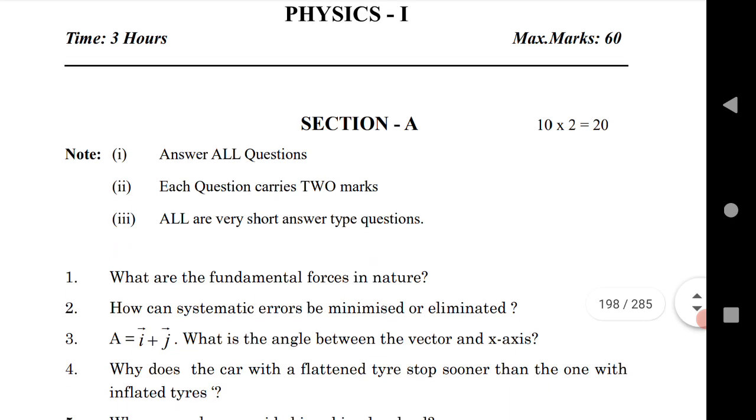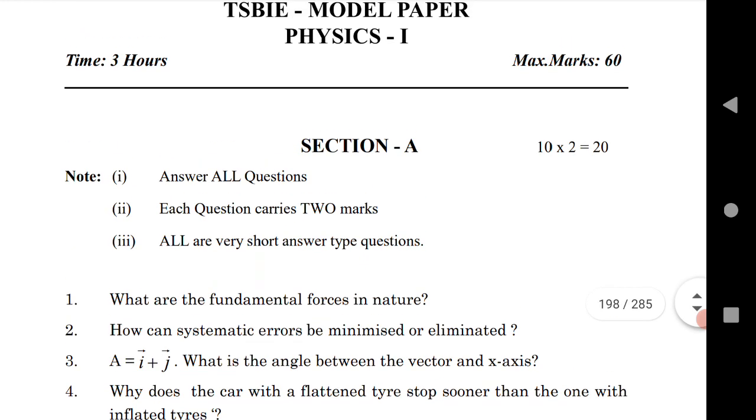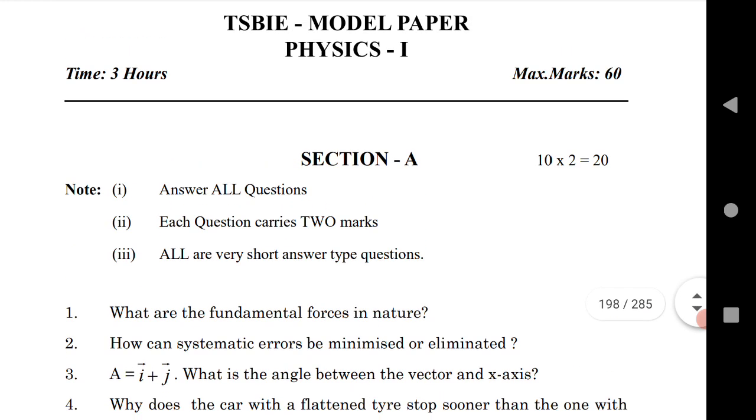In physics we have three sections: Section A, Section B, and Section C, and each section carries different marks. Section A carries two marks, Section B carries four marks, and Section C carries eight marks.